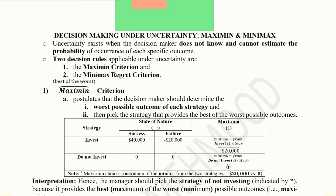The first step is to extract the worst possible outcome of each strategy, then choose the best of those worst outcomes. Let's see how to do this with an example. We have two strategies — invest in the business, or avoid investing — and two states of nature: success and failure.